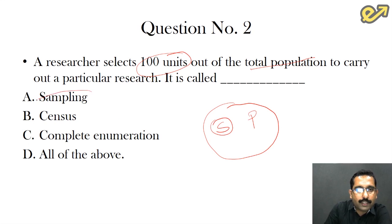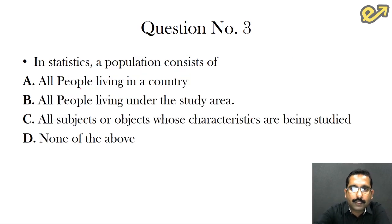The third question is: in statistics, a population consists of all people living in a country? Definitely not, because here the focus is on a particular research statement that is being studied. All people living under the study area need not be the case. So the option that is left for us is the C option: all subjects or objects whose characteristics are being studied. So they become the population.